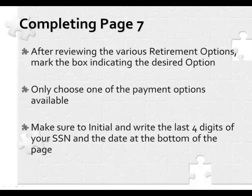Now that we have reviewed the retirement options, please complete page 7 by indicating your chosen retirement option. Be sure to choose only one payment option. Make sure to initial the bottom of the page and write the last four digits of your Social Security number and the date. These will be required at the bottom of every other page on your retirement application.